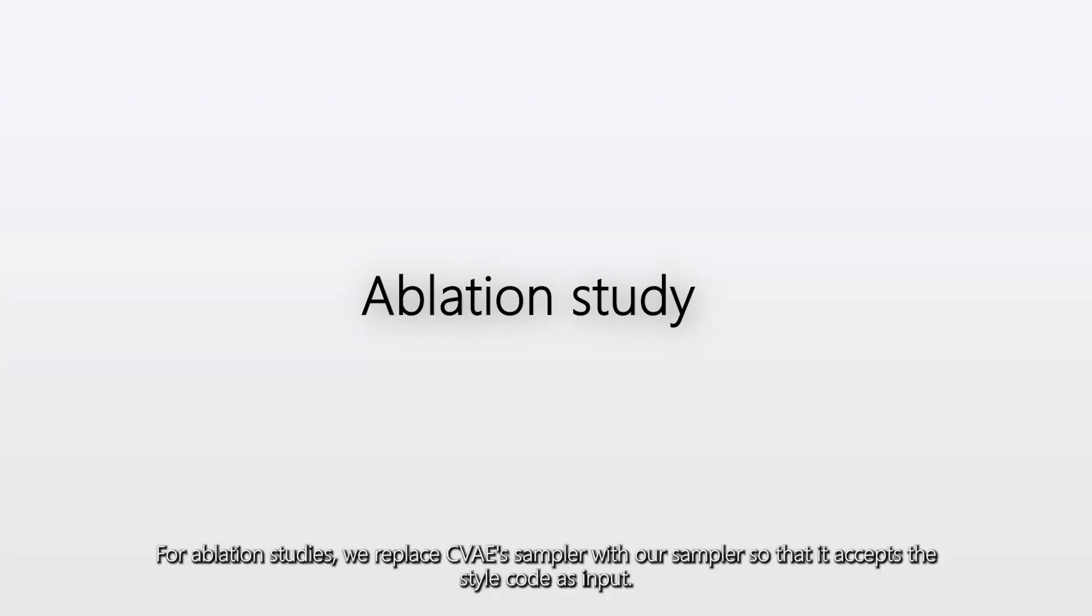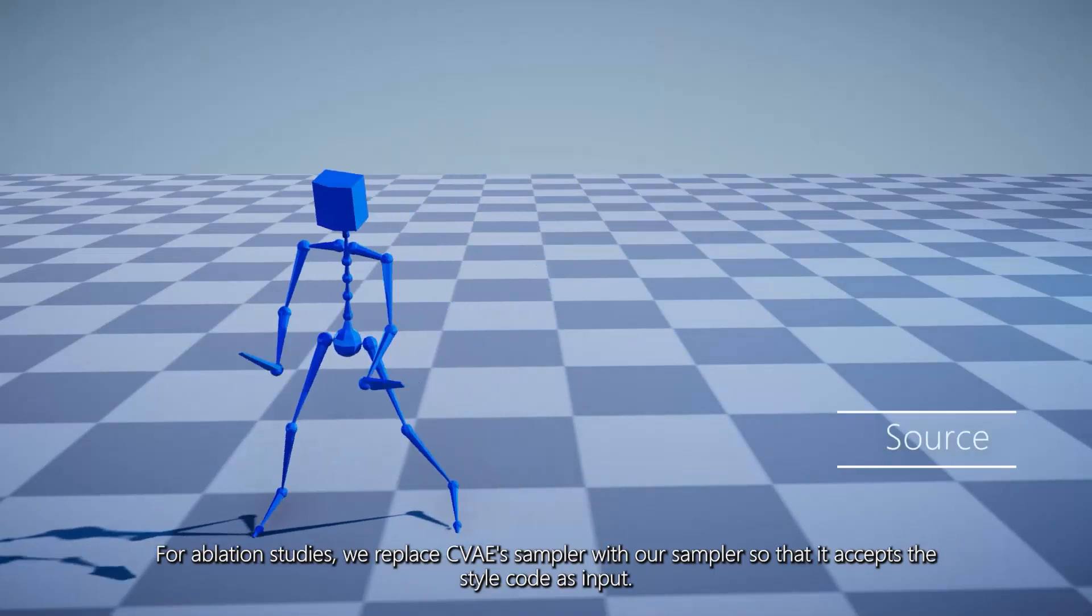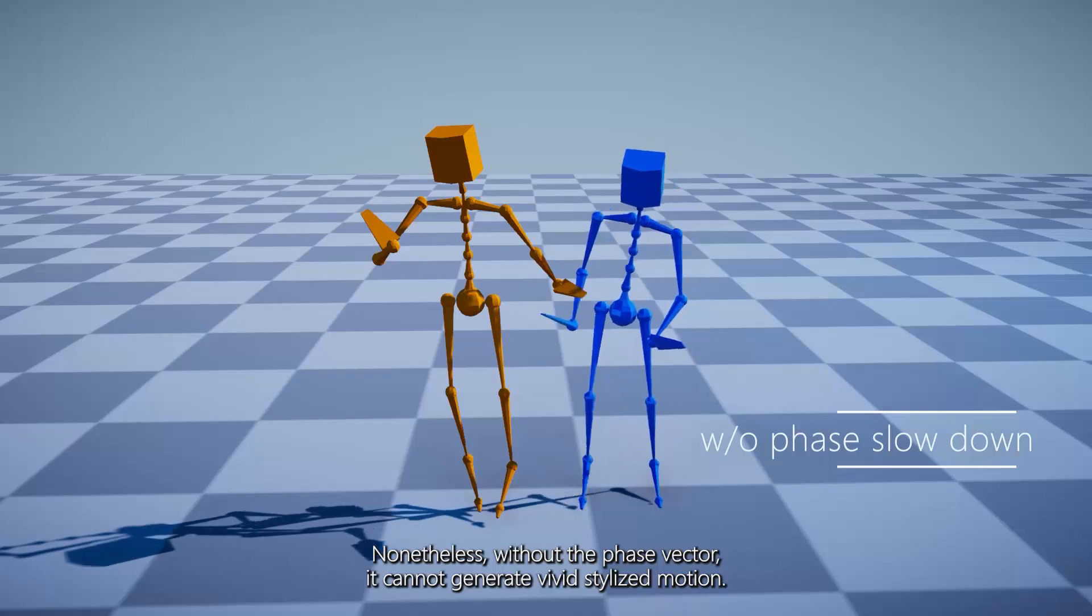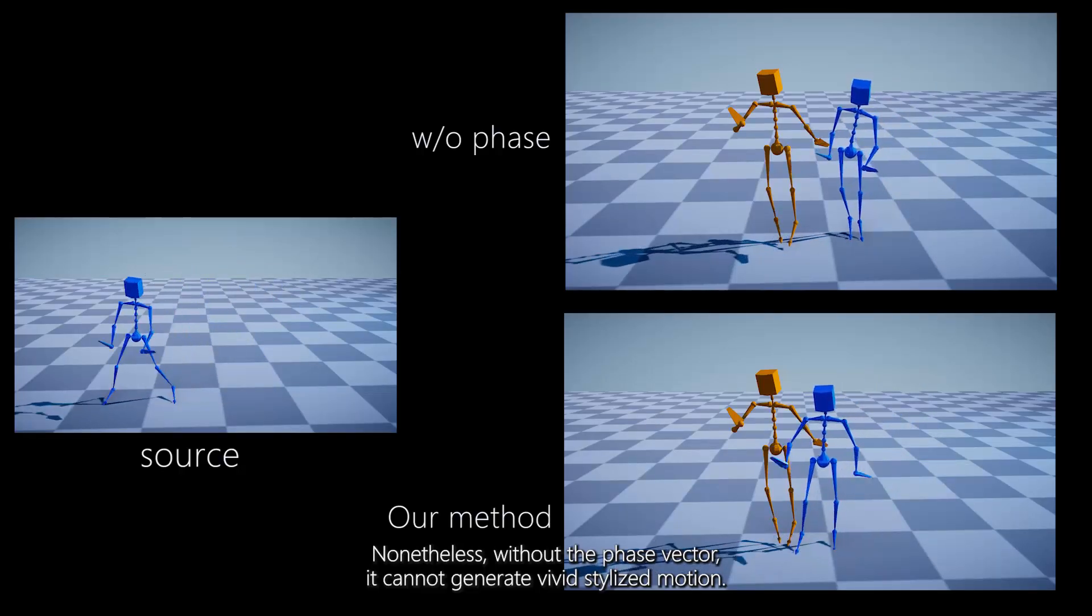For ablation studies, we replace CVAE's sampler with our sampler so that it accepts the style code as input. Nonetheless, without the phase vector, it cannot generate vivid stylized motion.